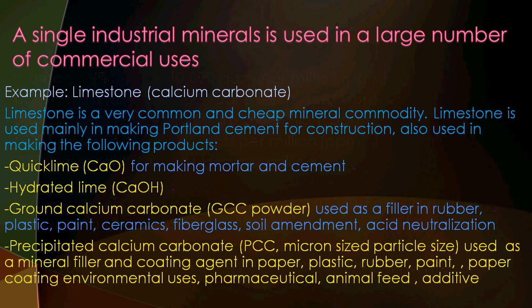A single industrial mineral can be used in a large number of applications. Take limestone, for example. Its chemical composition is calcium carbonate (CaCO3). Limestone is a very common and cheap mineral commodity, mainly used in making Portland cement for construction. It can also be converted into quicklime (CaO) for making mortar and cement, and by adding water, quicklime can be converted into hydrated lime. Limestone can be ground into fine particles called ground calcium carbonate (GCC), used as a filler in rubber, plastic, paint, ceramics, fiberglass, soil amendment, and acid neutralization.